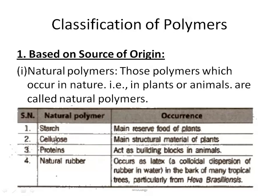Natural polymers include starch, cellulose, proteins, and natural rubber. Starch is the main reserve food for plants; cellulose is the main structural material of plants; proteins act as building blocks in animals; and natural rubber occurs as latex, which we extract from certain trees. These are all examples of natural polymers — polymers which occur in nature.